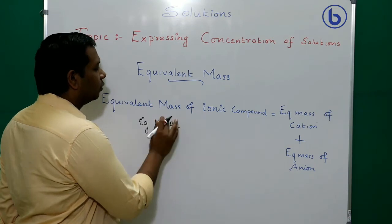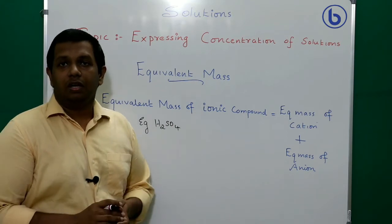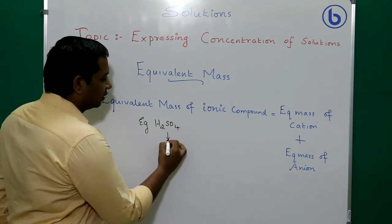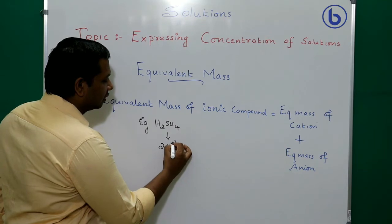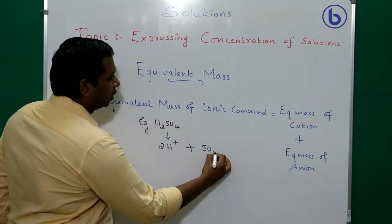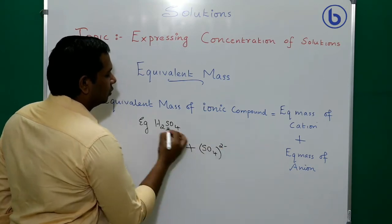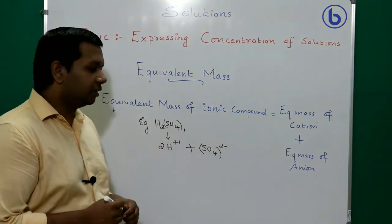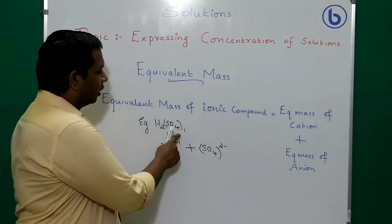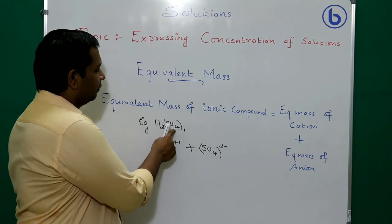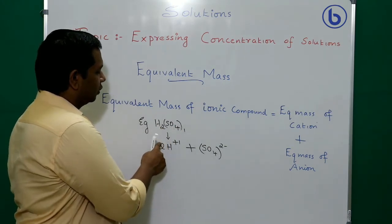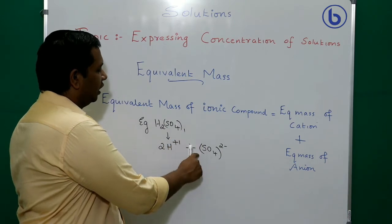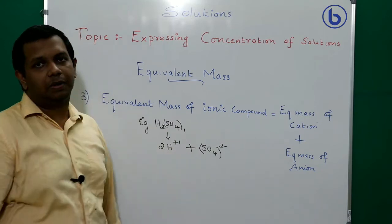H₂SO₄ dissociates as 2 H⁺ and SO₄²⁻. Hydrogen has valency 1, and sulfate ion SO₄²⁻ has valency 2. So we have 2 H⁺¹ and one SO₄²⁻.